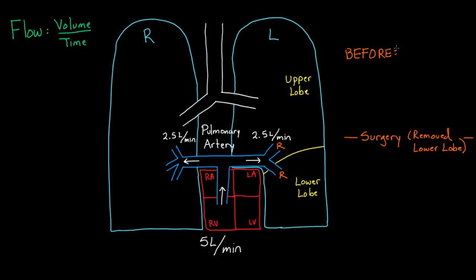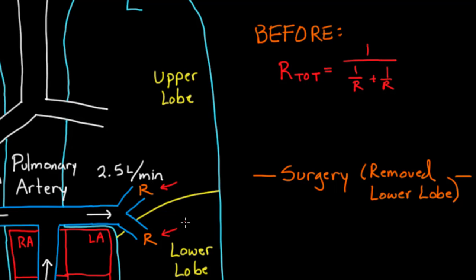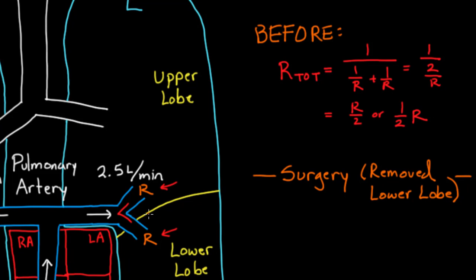Before the surgery, with a branch in the vessel, we calculate total resistance using the parallel resistance formula: R_total = 1 / (1/R + 1/R), which equals 1 / (2/R), which gives us R/2, or one-half R. So the total resistance before surgery was one-half R. It's a little counterintuitive — having a fork in the road actually cuts resistance in half, because blood can go one of two ways.